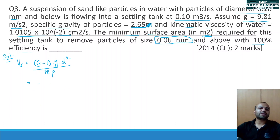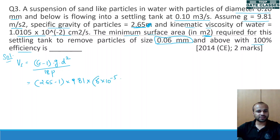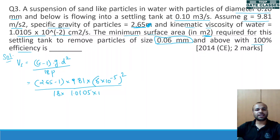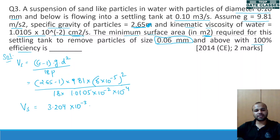Putting in the values: (2.65−1) × 9.81 × d². Here d = 0.06 mm = 6×10⁻⁵ m, so d² is (6×10⁻⁵)². Divided by 18 times the kinematic viscosity, which is 1.0105×10⁻² cm²/s, converted to m²/s by multiplying by 10⁻⁴. The settling velocity comes out to be approximately 3.204×10⁻³ m/s.